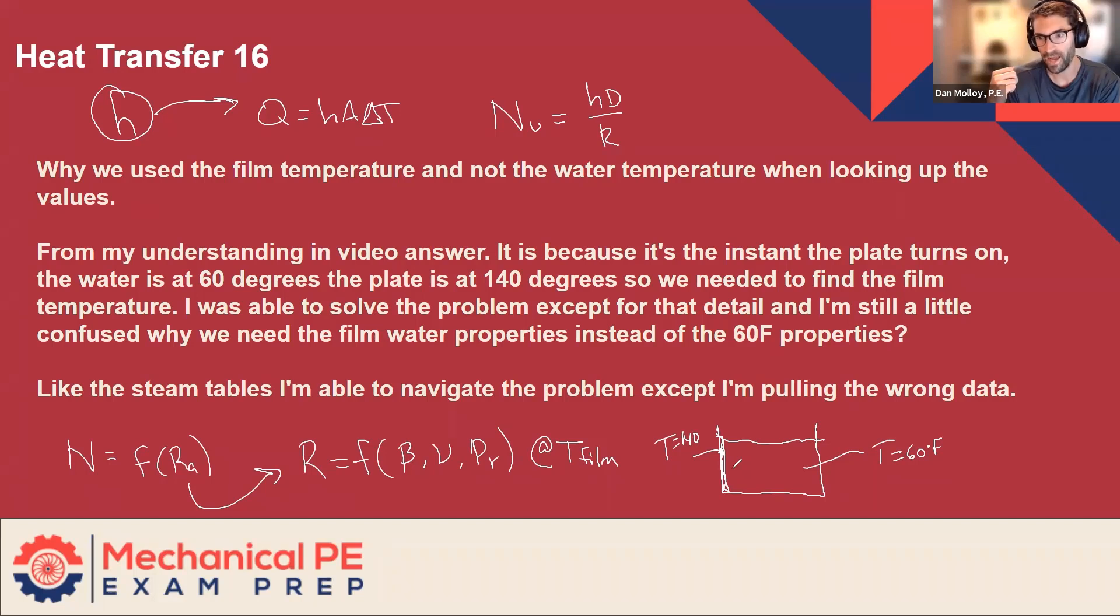So that's as far as my intuition takes it. And then it's like, well, how are heat transfer problems typically solved? Like, what are the fundamental assumptions behind this? And it turns out that all they do is just take the average. And that's where the notion of film temperature comes in. In this case, it's going to be the 60 plus 140 over two.